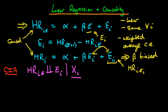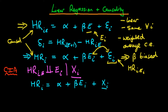We can use the CIA by including the vector of covariates in our regression. So we have the previous equation, now augmented with X_I prime times delta plus V_I. By construction, V_I is orthogonal to X_I — in other words, the expectation of V_I given X_I equals zero.